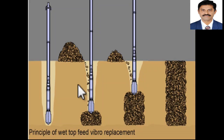This is the top feed Vibroreplacement technique shown in another picture. These slides have shown you how the special compaction techniques are performed in the field. In the other slides, we will see how other ground improvement techniques are performed.